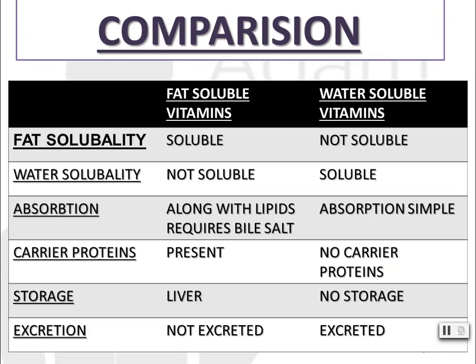Coming to the comparison — fat-soluble vitamins are soluble in fat and absorbed along with lipids. They require bile for their absorption, and during absorption they require carrier proteins. They are stored in the liver and not excreted.